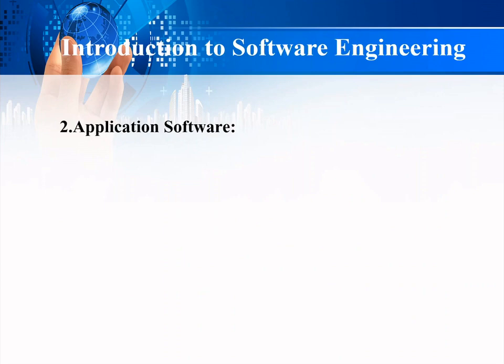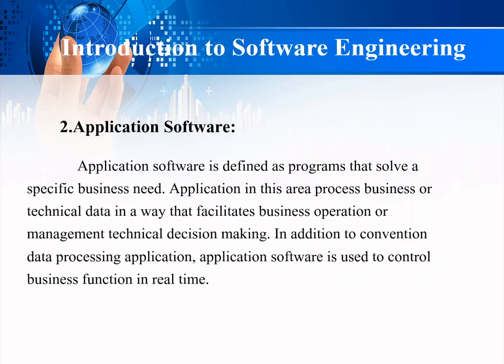The second category is application software. Application software is a set of different programs that solve specific business needs, processing business or technical data in a way that facilitates business operations or management and technical decision making. Application software is used to control business functions in real time. For example, Microsoft Office Word is application software. Application software is a standalone program that solves specific business requirements and uses technical data to facilitate business operations.